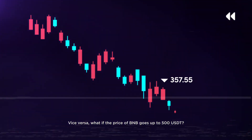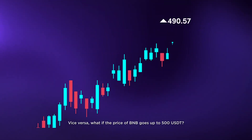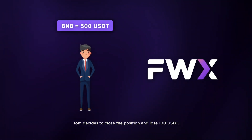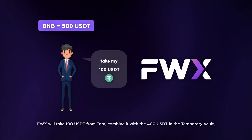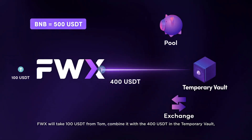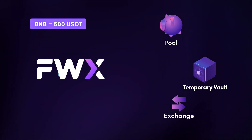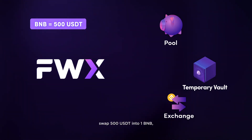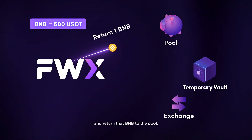Vice versa — what if the price of BNB goes up to 500 USDT? Tom decides to close the position and lose 100 USDT. FWX will take 100 USDT from Tom, combine it with the 400 USDT in the temporary vault, swap 500 USDT into 1 BNB, and return that BNB to the pool.